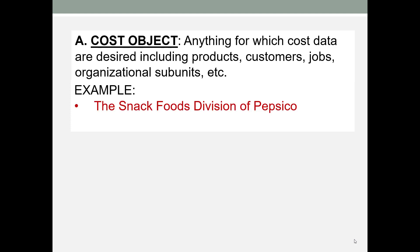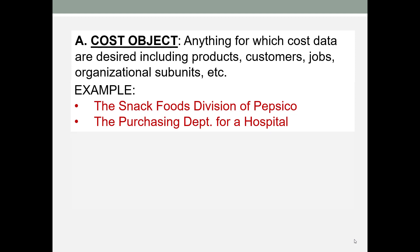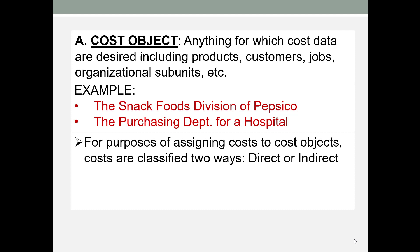Specific examples include the snack foods division of PepsiCo, or the purchasing department for a hospital. When we are assigning cost to cost objects, they will either be classified as a direct cost to the cost object, or an indirect cost to the cost object.